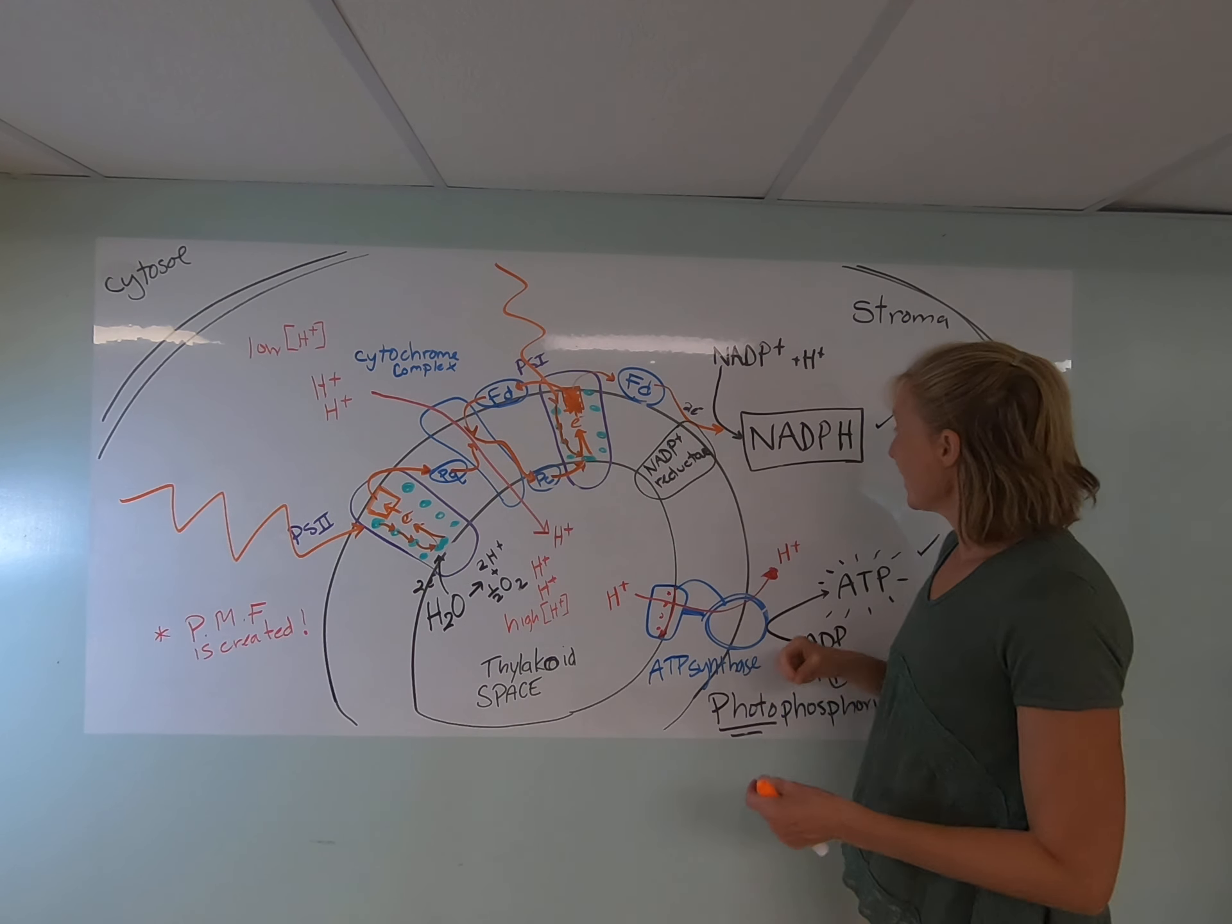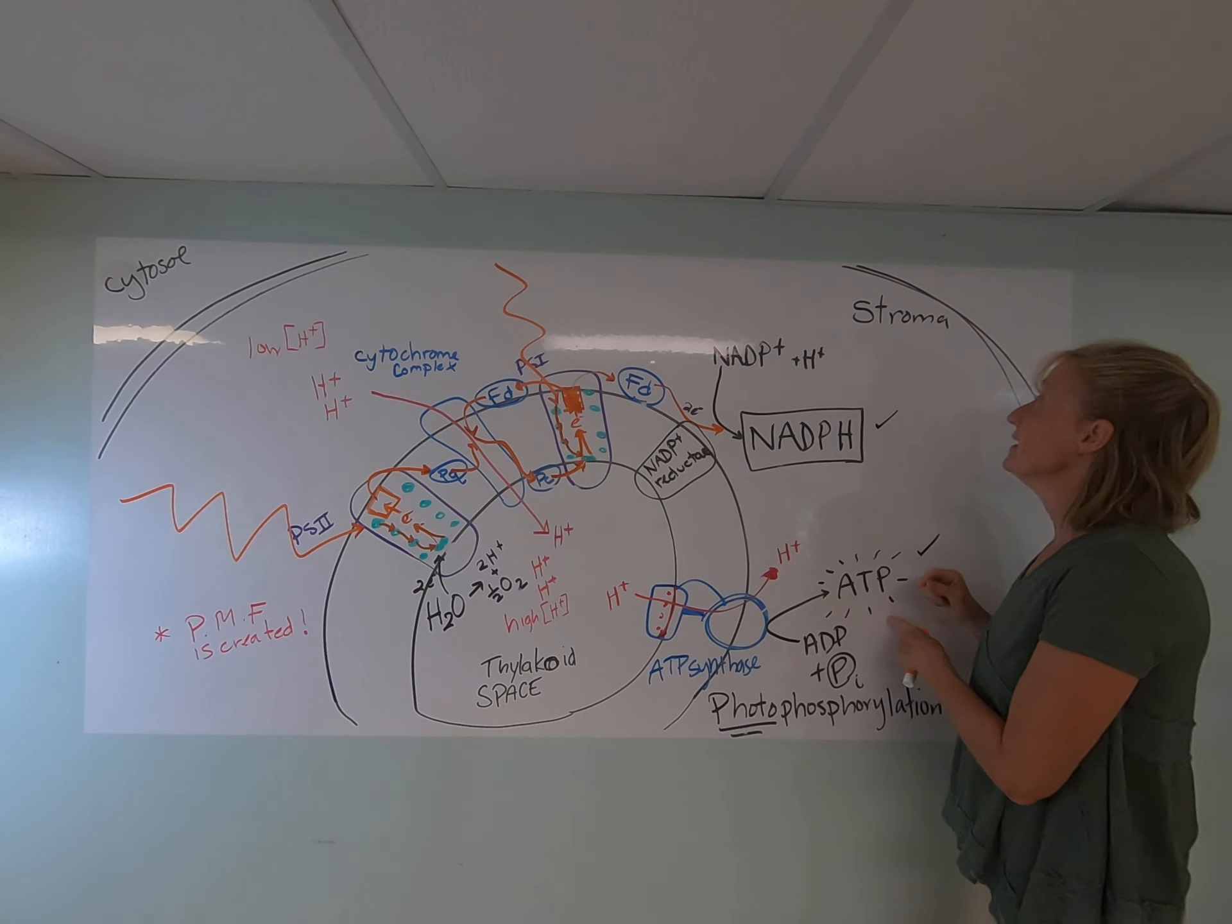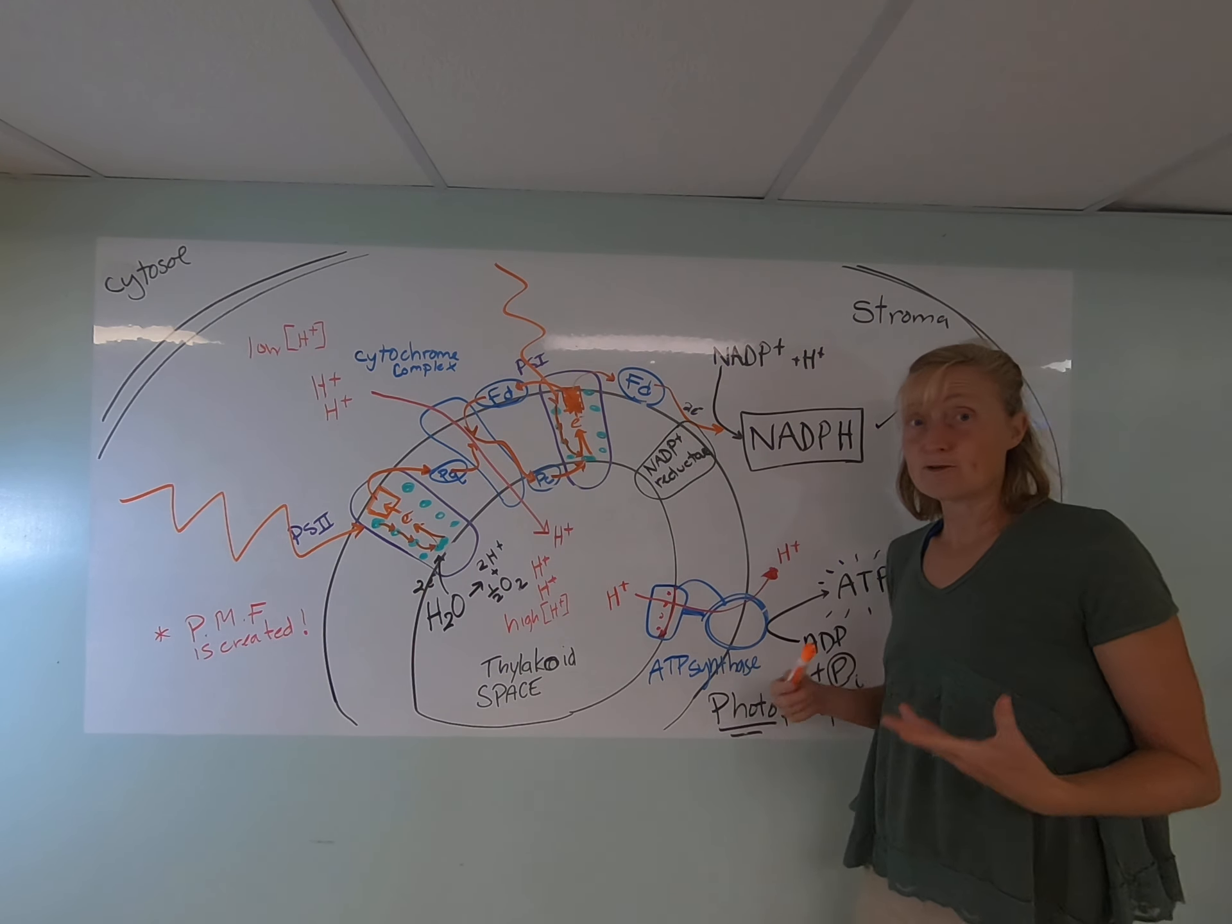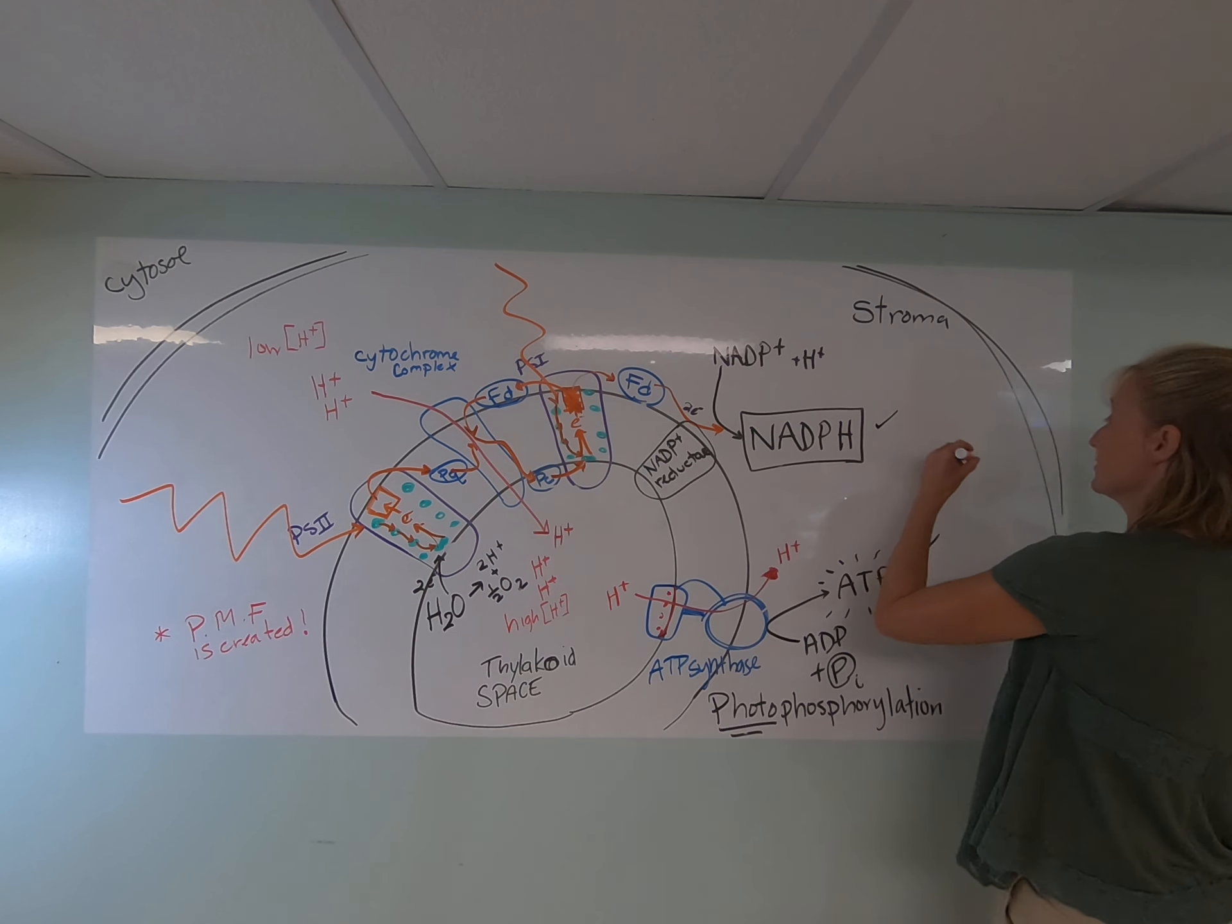Now we're ready to figure out what happens to the NADPH and the ATP that we make. They move on and they're used in the Calvin cycle. The Calvin cycle is going to take place out here in the stroma.